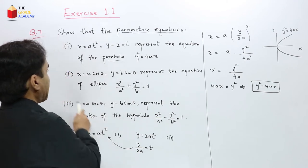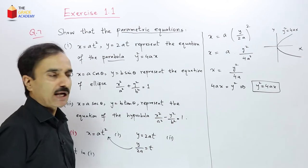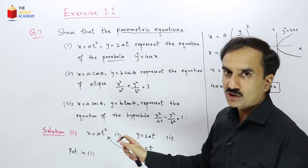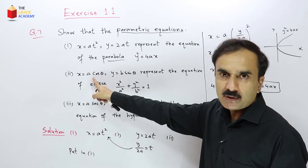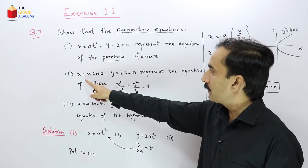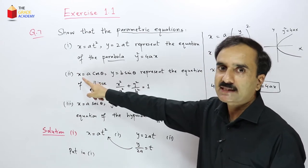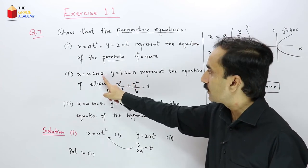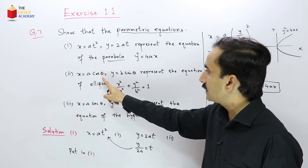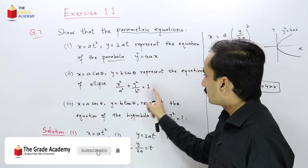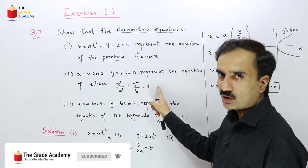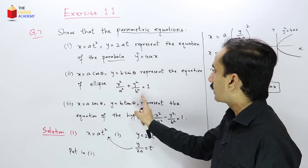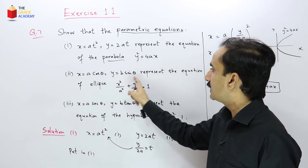Now in the second part, parametric equations x = a·cosθ and y = b·sinθ are given. The parameter here is θ, since x and y are both functions of θ. We need to eliminate θ. The resulting equation represents an ellipse — an oval-shaped graph.